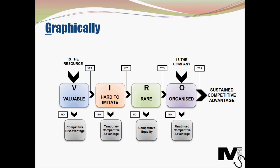For Rarity: if the resource is rare, we move to the next factor; if not, there is competitive equality, because many competitors will have the same resource, limiting any advantage. Finally, if the company is organized and all other factors are met, we achieve a sustainable competitive advantage. If the company is not organized, we arrive at unutilized competitive advantage — a potential advantage the company simply cannot capitalize on.